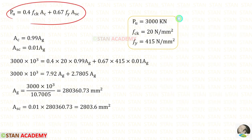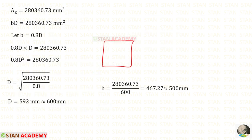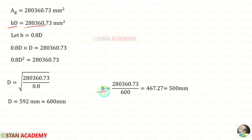Applying all values in the formula we will get the gross area. We know that ASC is equal to 0.01 AG, giving ASC as 2803.6 mm². The gross area equals B into D. Let us keep B as 0.8D, so substituting we get D equal to 592 mm, which we round to 600 mm. Then B equals gross area divided by 600, giving approximately 500 mm.